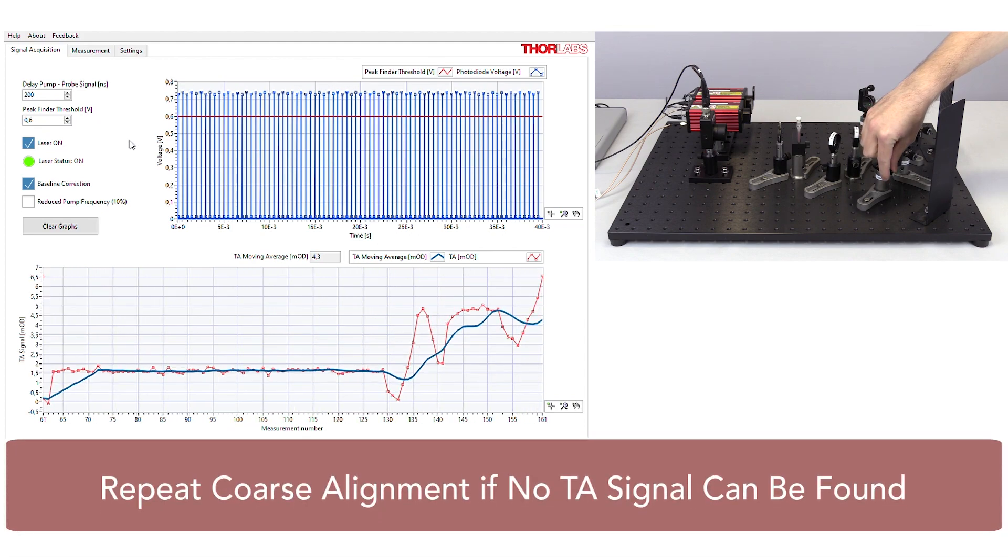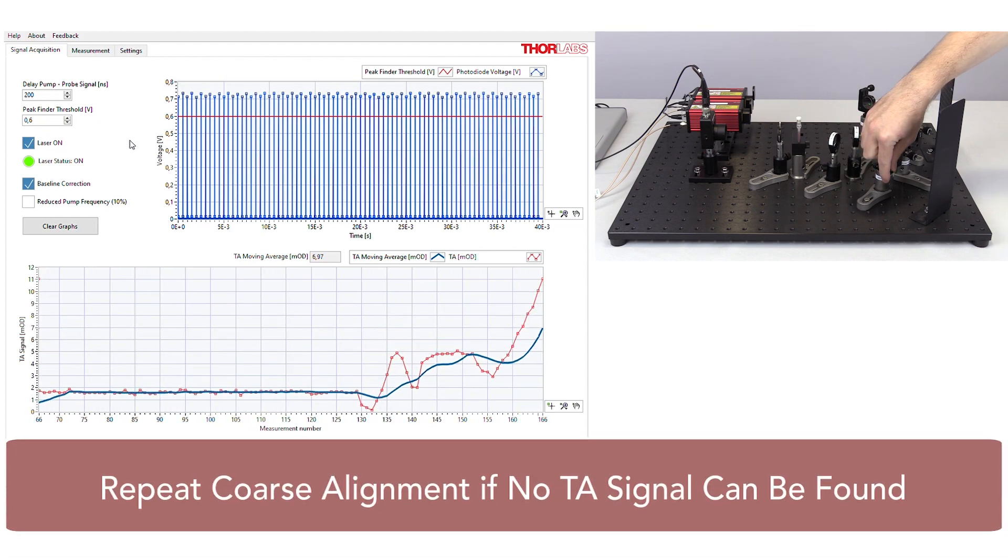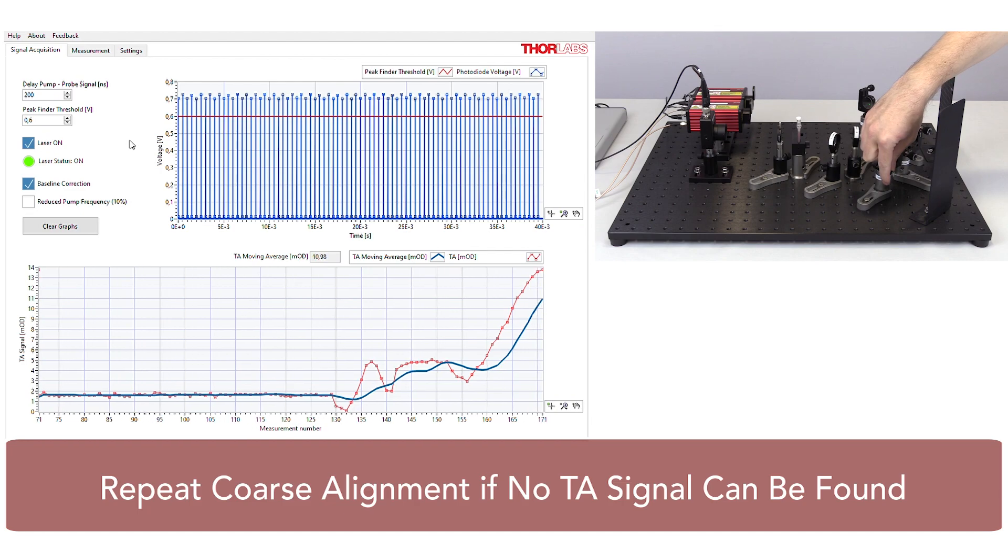If the signal is no longer visible at this point, replace the sample with the detector card and repeat this procedure.